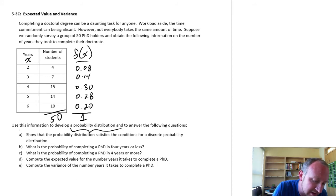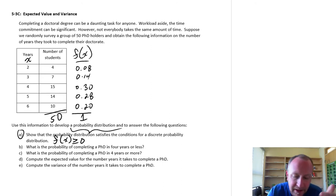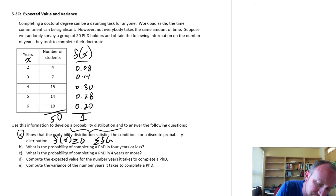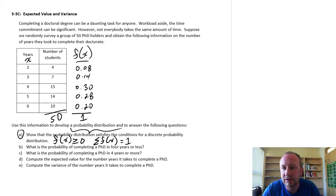Part A is asking us, show that it satisfied the conditions for a discrete probability. Well, here we have that all of those frequencies are non-negative. I don't have anything here that is less than 0, so we meet that first criteria. And if we add all of these together, they will be equal to 1. That means that it's exhaustive. We randomly sample one PhD holder, and they will fall between 2 and 6 years to have completed their PhD. So all of those conditions are met. So we're fine.